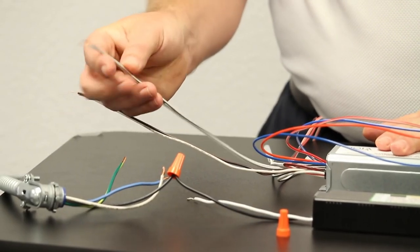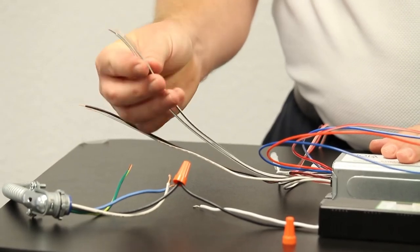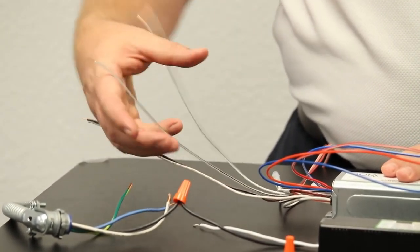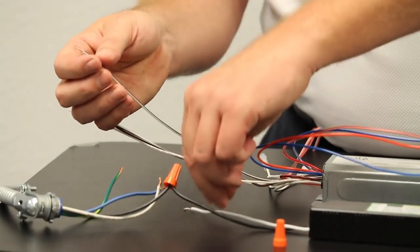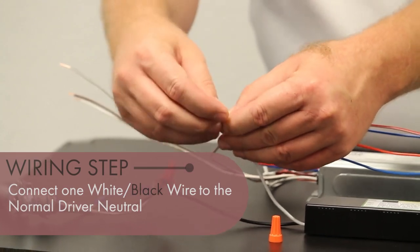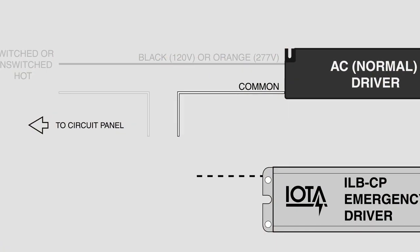Next, we're going to take a white-black wire from the ILBCP. Do note there are two of them. It does not matter which one that you grab. There is no polarity, and you will make this connection to the normal driver. This is a driver-to-driver connection only.